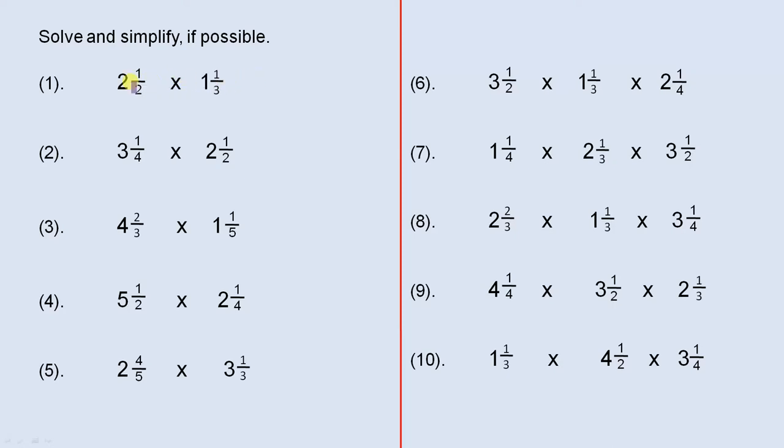So basically there are some very simple rules. Here are the two mixed fractions. There are four simple rules. Firstly, change each of the mixed fractions to an improper fraction. Secondly, multiply the numerators together.